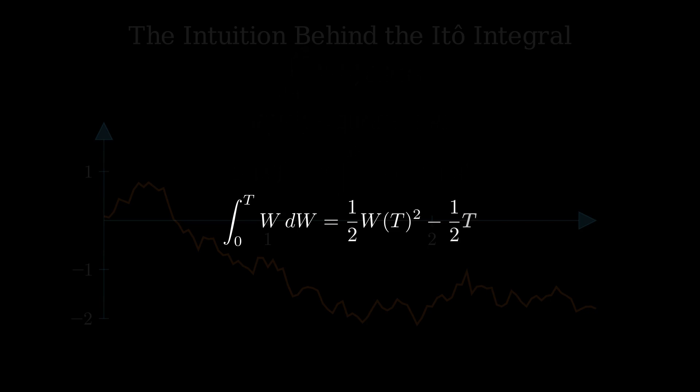What does this mean? The yellow term, ½W(t)², depends on where the path ends up—here at W(t). The red term, -½t, is a subtraction because the randomness adds up over time, thanks to that dt from earlier.